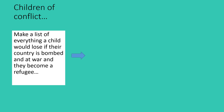What I want us to do now is to put those two terms back together and think about children that are living in conflict. I want you to imagine a child right in the middle of a conflict zone and make a list of everything that a child would lose if their country was bombed or at war and if they suddenly found themselves as refugees. Make a list of anything that you think a child would lose if they were in that situation.